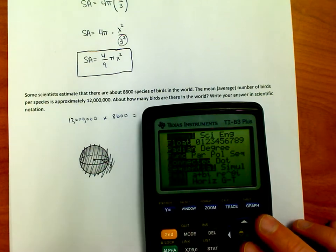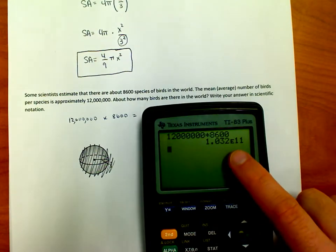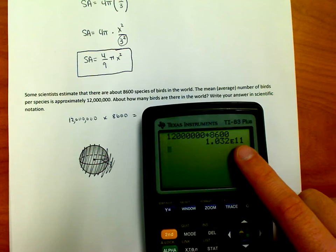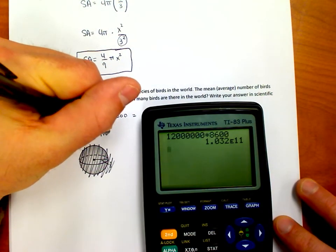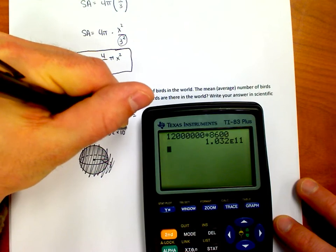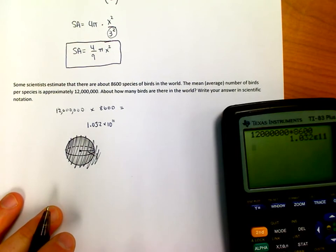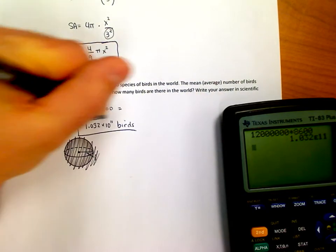Now, my mode is actually set up to normal. So, what's nice is it automatically displayed the value in scientific notation. That would be 1.032. Remember, e means times 10 to the 11th power. There are 1.032 times 10 to the 11th power. And we need an answer that has a label on it. So, the question is, how many birds are there in the world? So, we're going to say, that's how many birds there are.